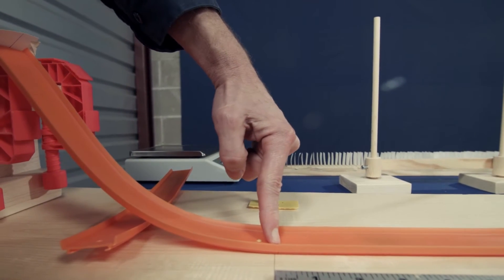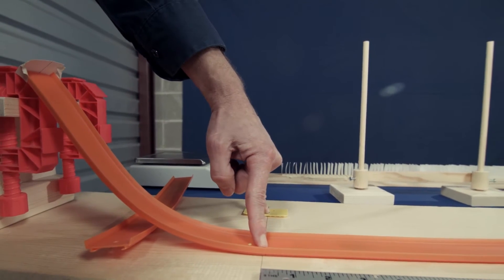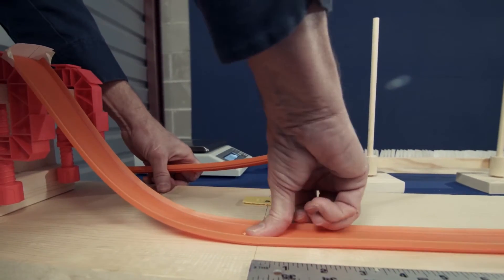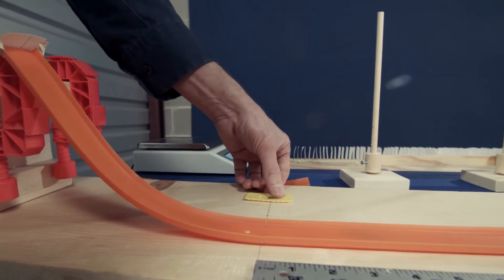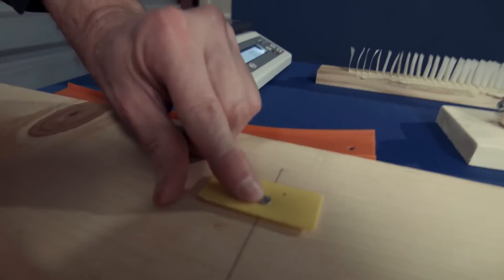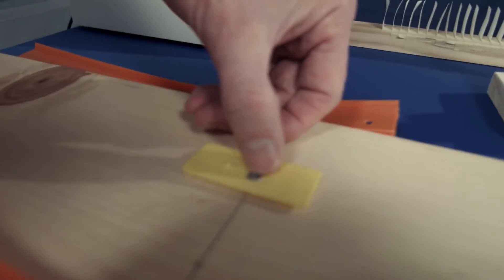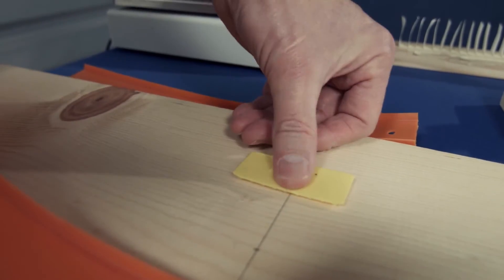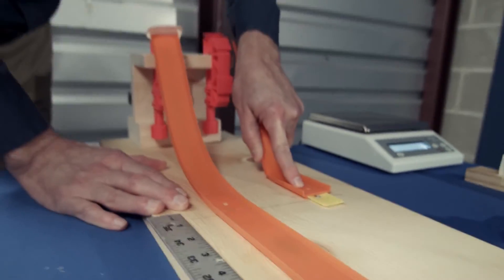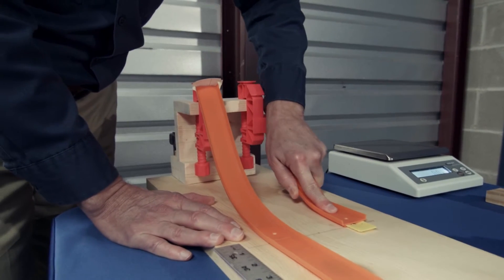Now once these are screwed down so that they won't go anywhere—and you notice that the head of that screw, I used flathead wood screws so that they would sink down into the plastic and not stick up—that way when we attach the track, the screw will not be in the way.